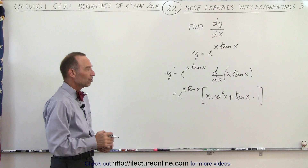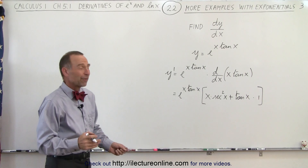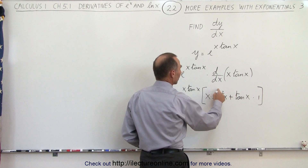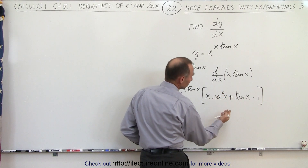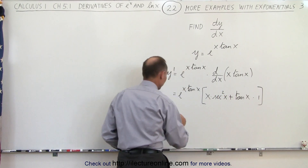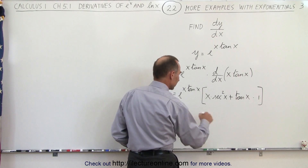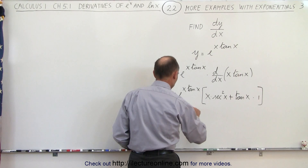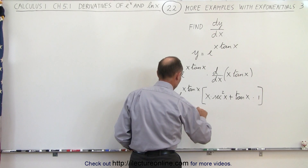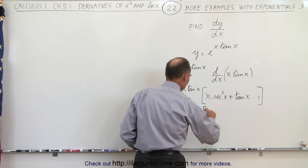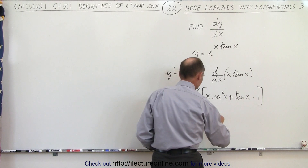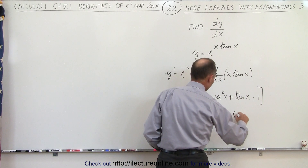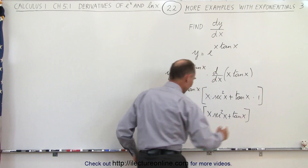We could potentially simplify that. The tangent is the sine over the cosine, and the secant squared is 1 over the cosine squared. But we could probably leave it and simply write it as: simplifying, we have e to the x times the tangent of x, times x times the secant squared of x, plus the tangent of x.